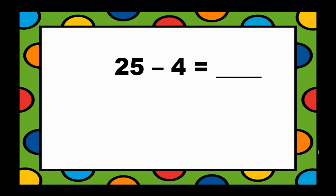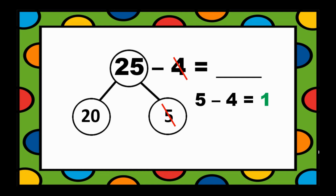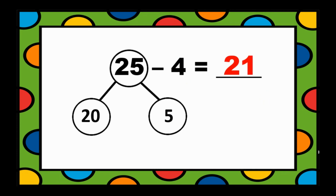Next, 25 minus 4. Let's make number bonds to make 25 — we have 20 and 5. Then, subtract the 1s: 5 minus 4 equals 1. Our answer is added to the tens value, which is 20. So, 20 plus 1 equals 21. Therefore, 25 minus 4 equals 21.